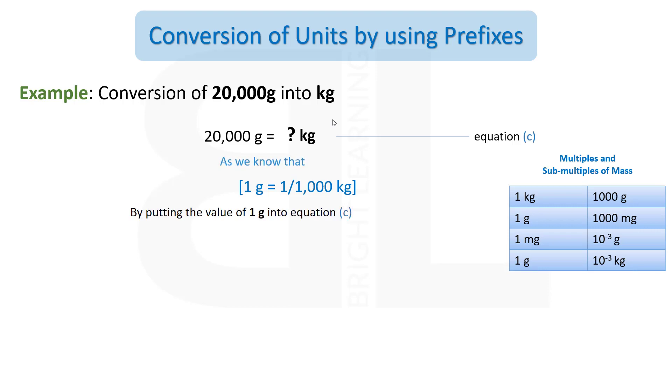By putting the value of 1 g into equation C, 20,000 g = 20,000 × 1/1000 kg. In the next step, we will divide 20,000 with 1000, and zeros will be cancelled with the zeros of 1000. Then we get 20 kg. It means that 20,000 g = 20 kg.